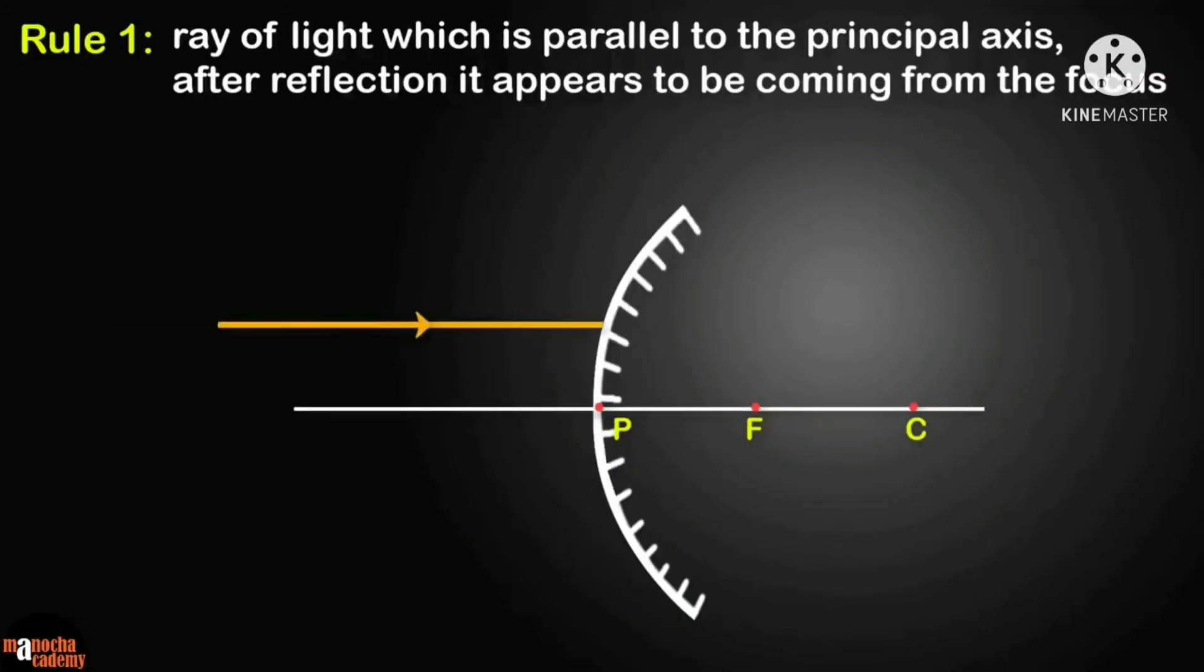Rule 1: a ray of light which is parallel to the principal axis, after reflection, appears to be coming from the focus. Can you see that the real rays are shown in solid lines and those behind the mirror are shown with dashed lines?